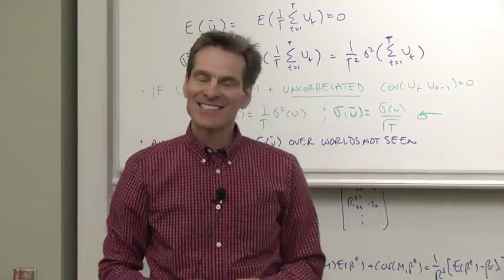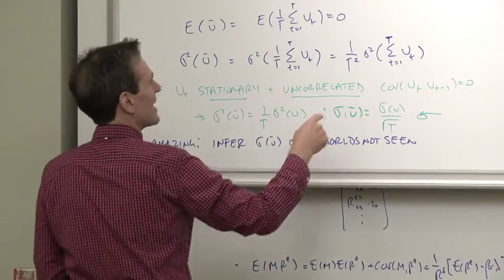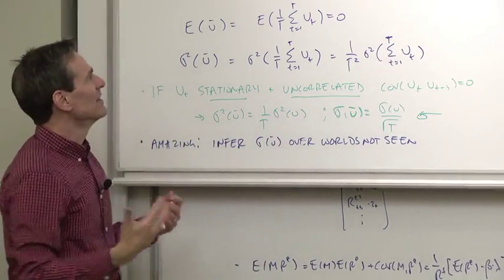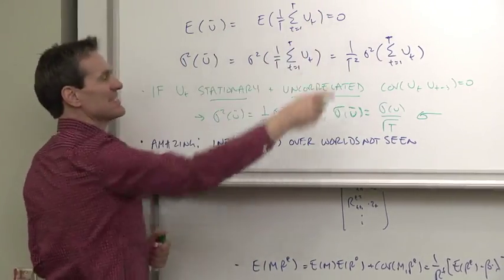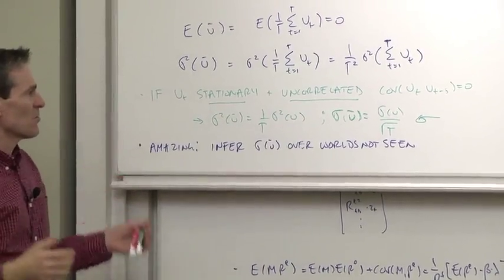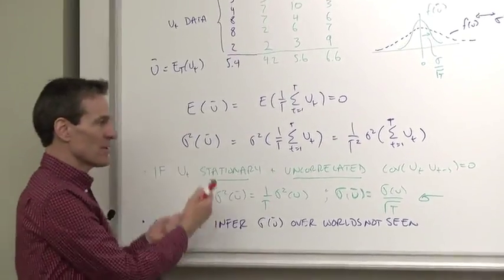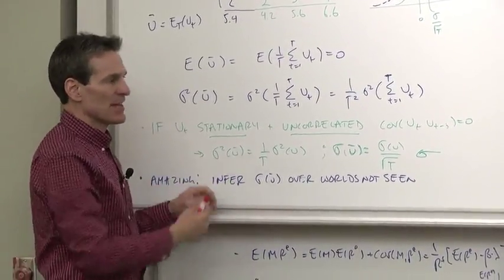That's pretty amazing that statisticians can, by looking at just how much u varies in our world and a little assumption, learn about how the sample mean might vary across all the worlds not seen. Well, that's great. And that's a reminder of what a variance of a sample mean is and how we calculate it.